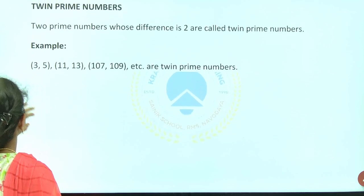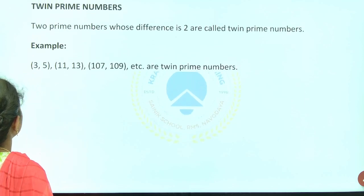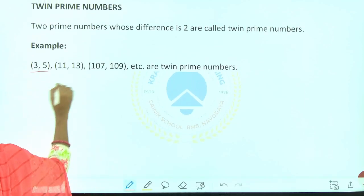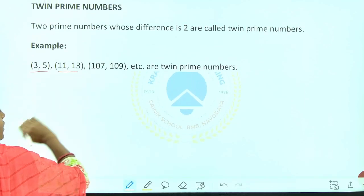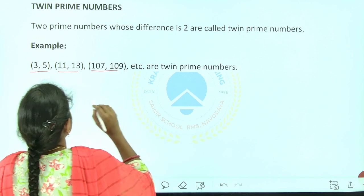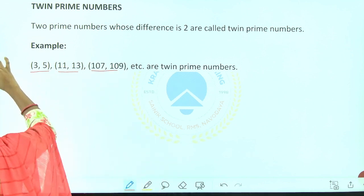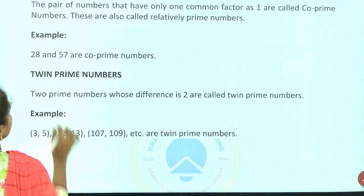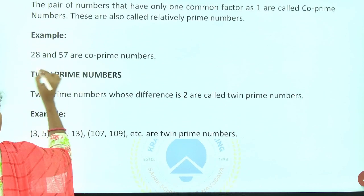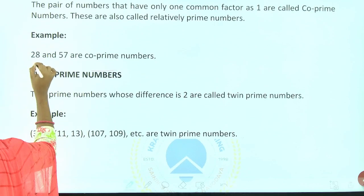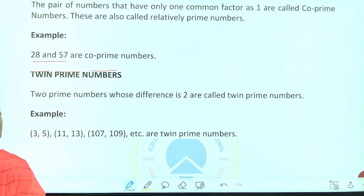You can see examples here: 28 and 57 are co-prime.